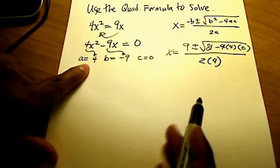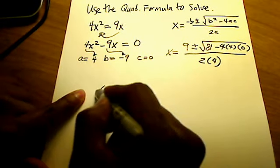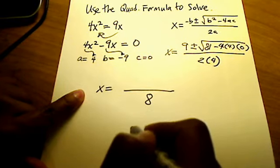Okay, so far so good. I hope you see that my denominator is just simply going to be an 8, because 2 times 4 is 8. There's my denominator of 8.